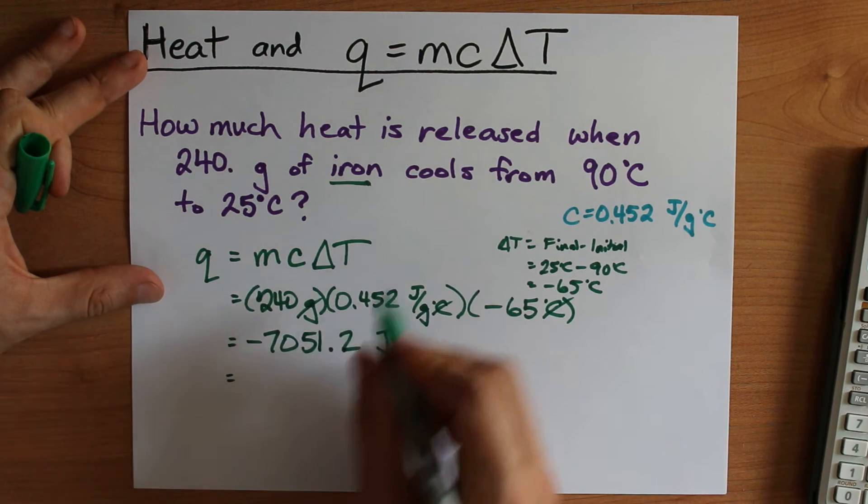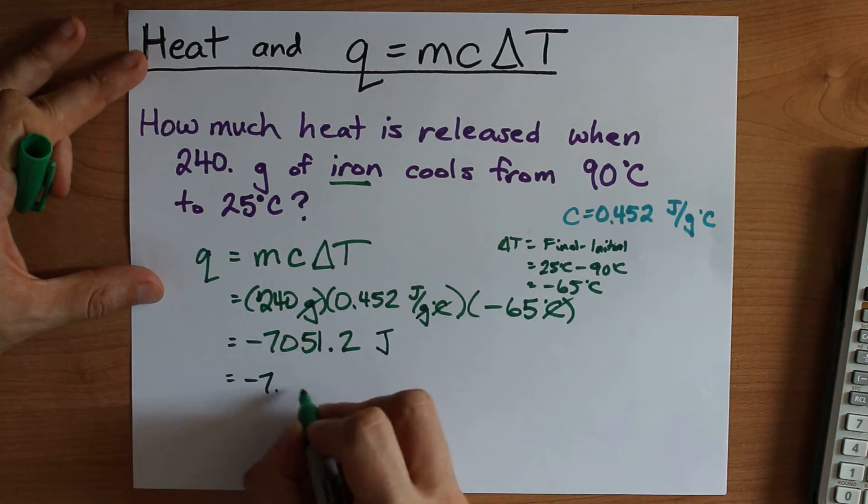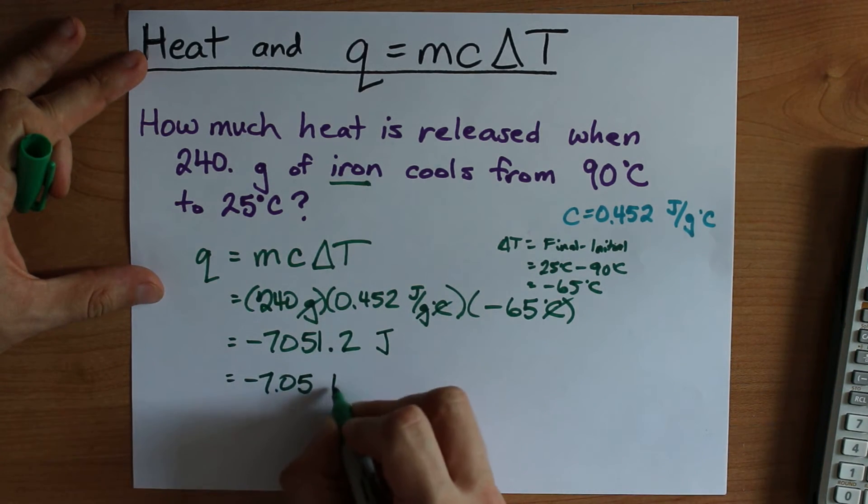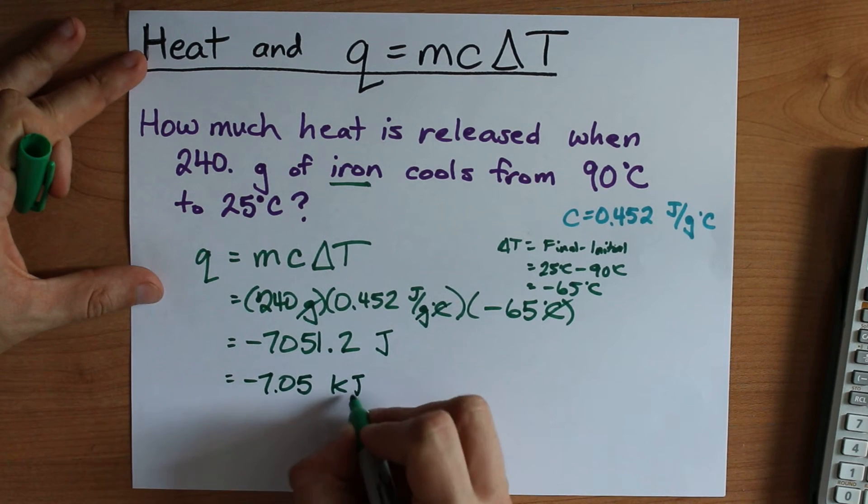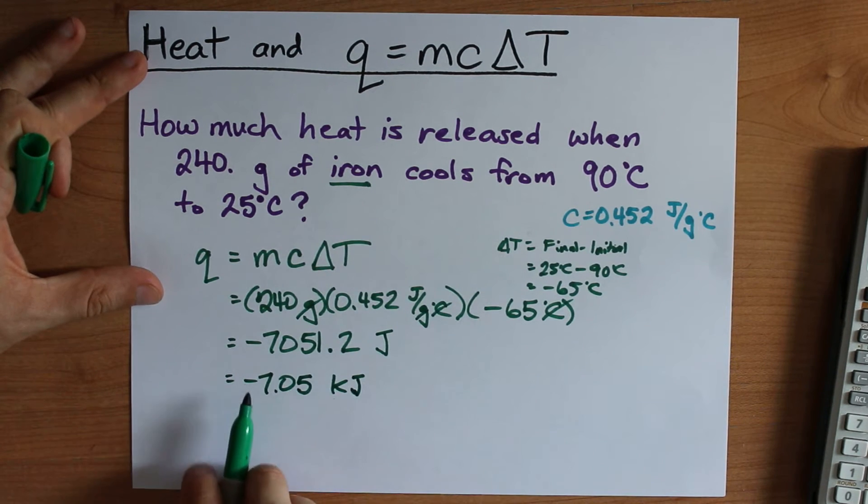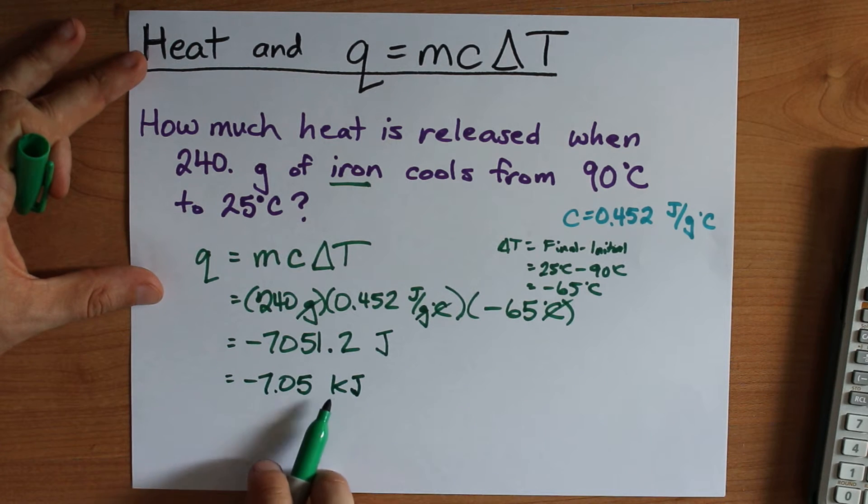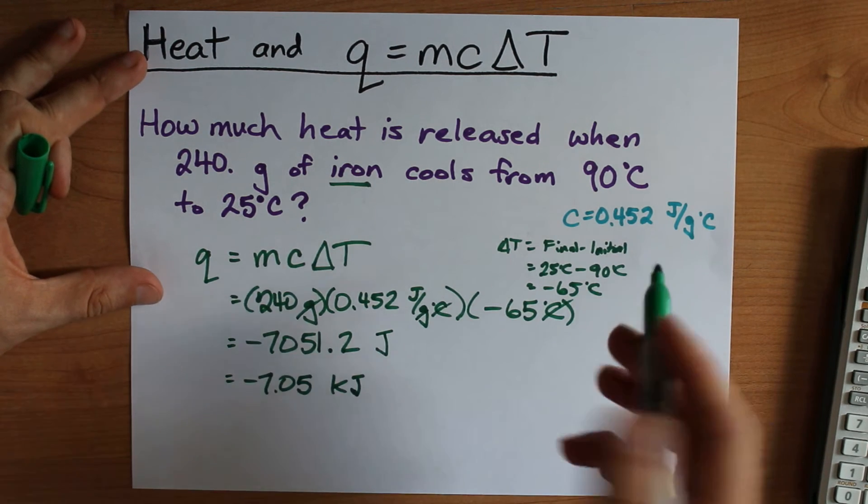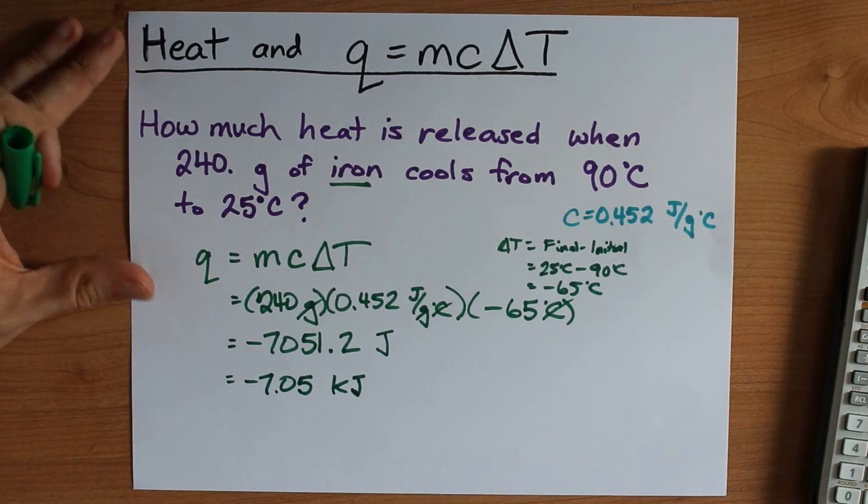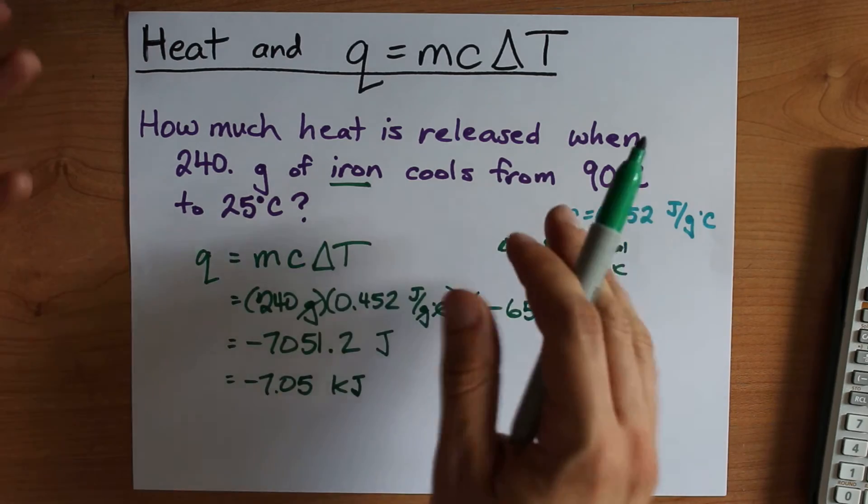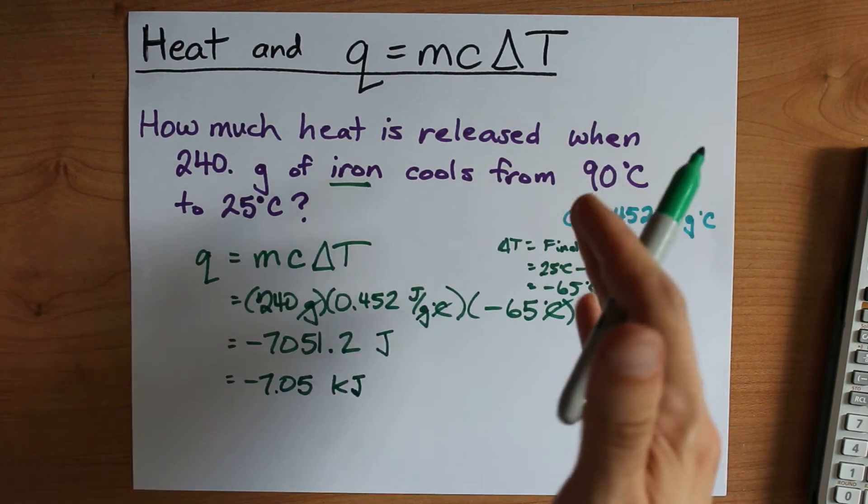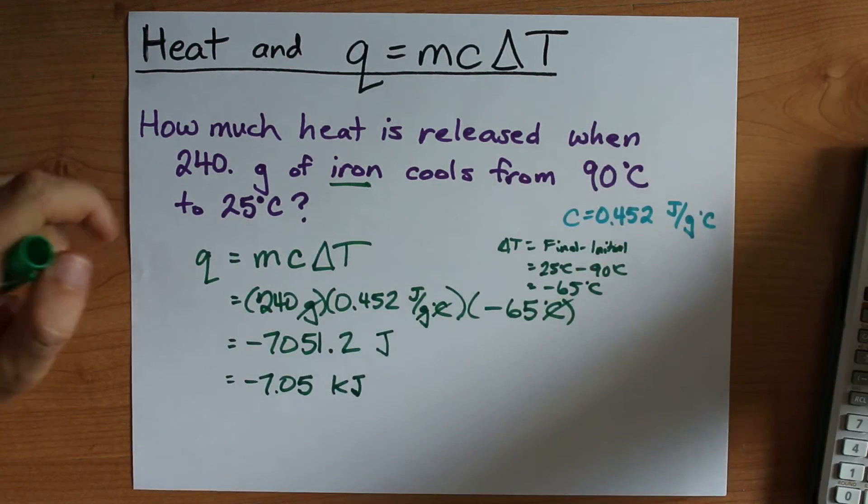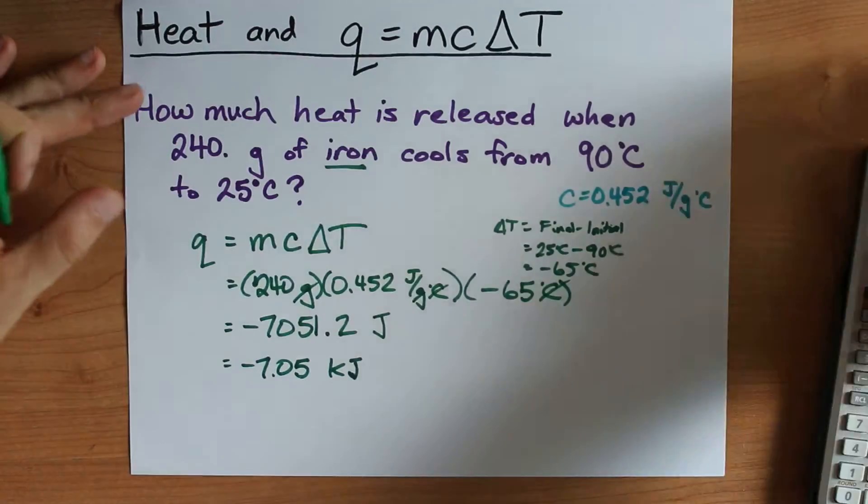Now I can convert that to kilojoules by dividing by a thousand. I'm going to take a couple digits off that as well. So I'm releasing, that's what the negative is for, 7.05 kilojoules of heat when this process occurs. It's a pretty easy formula. The tougher questions that you're going to be asked are solving for either m or c or delta t.